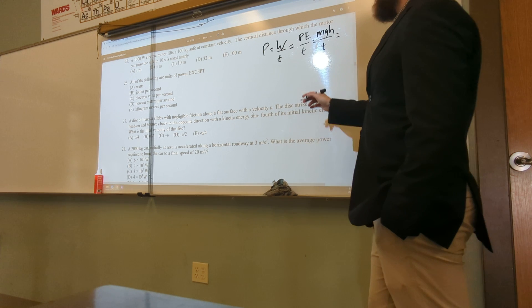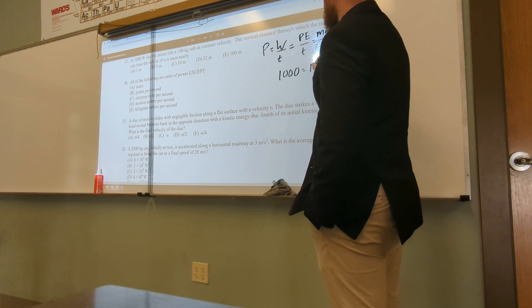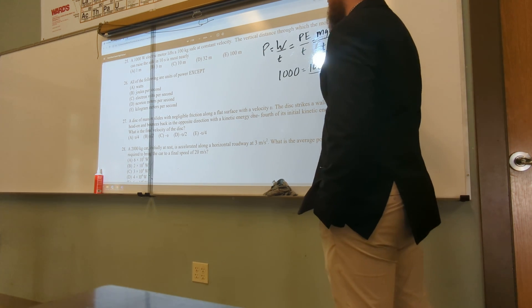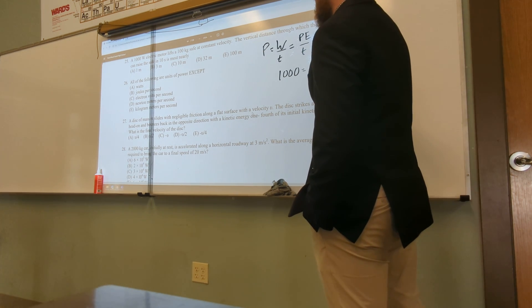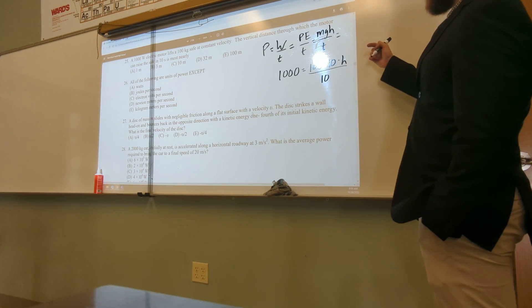So now let's go ahead and plug in things. My power is 1,000 equals M, which is 100, times 10, times H, divided by T, which is 10. And I just need to find H.